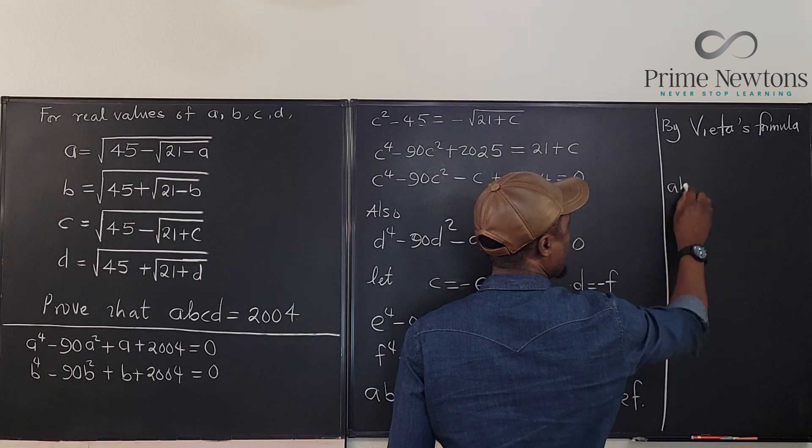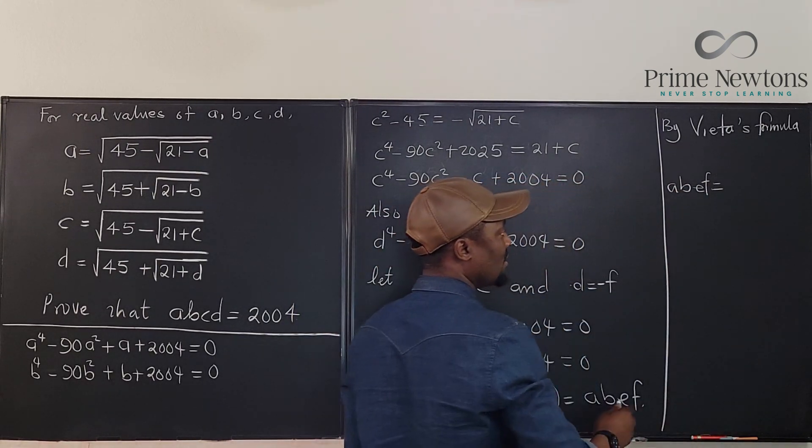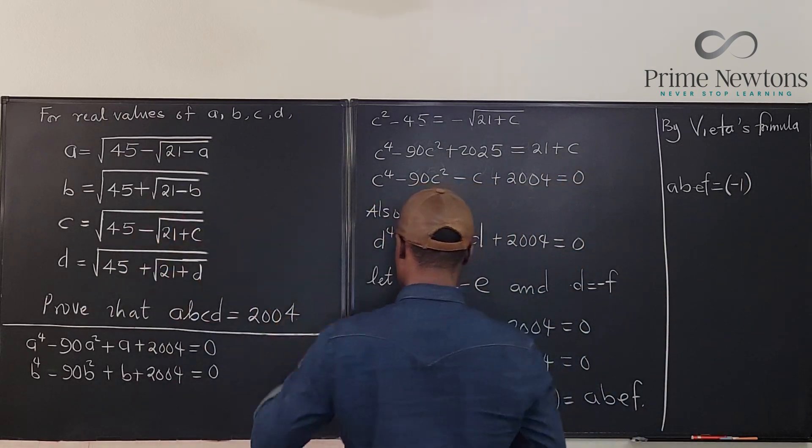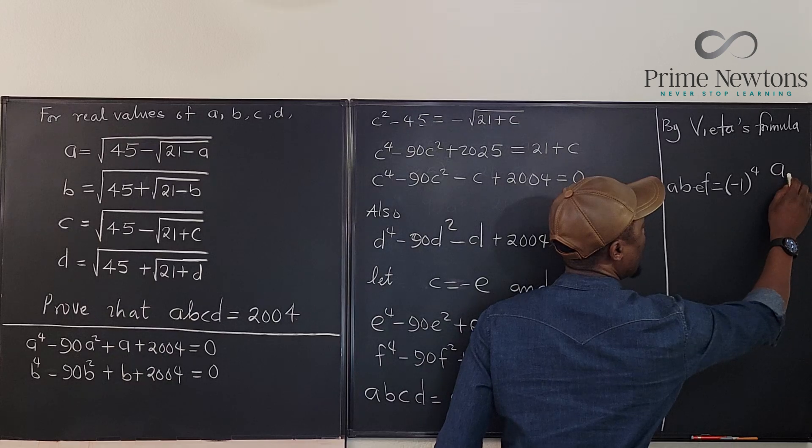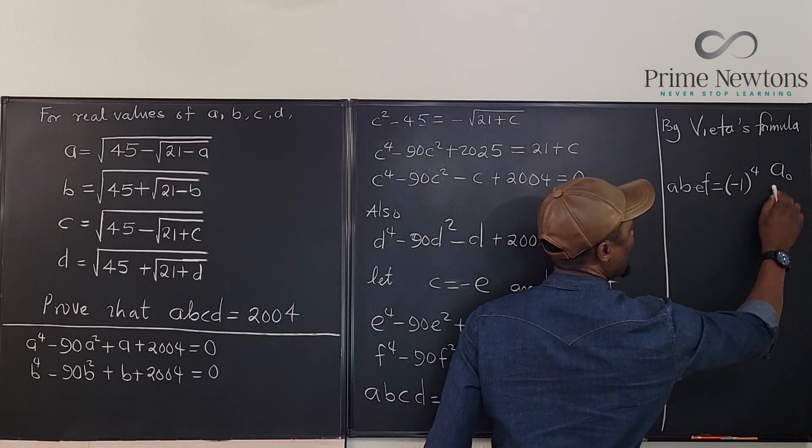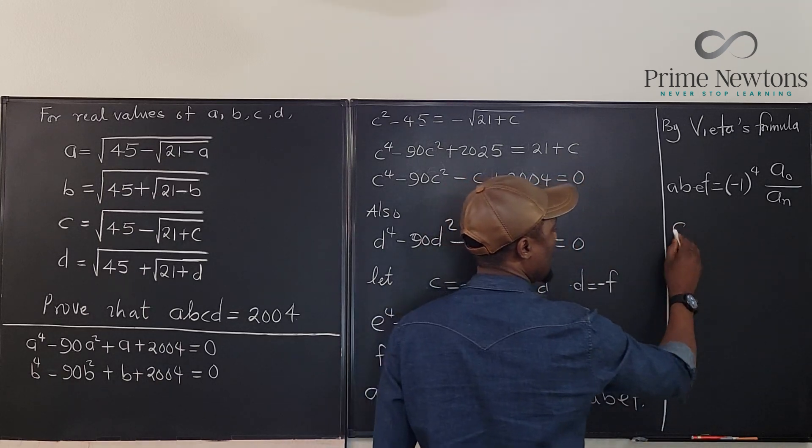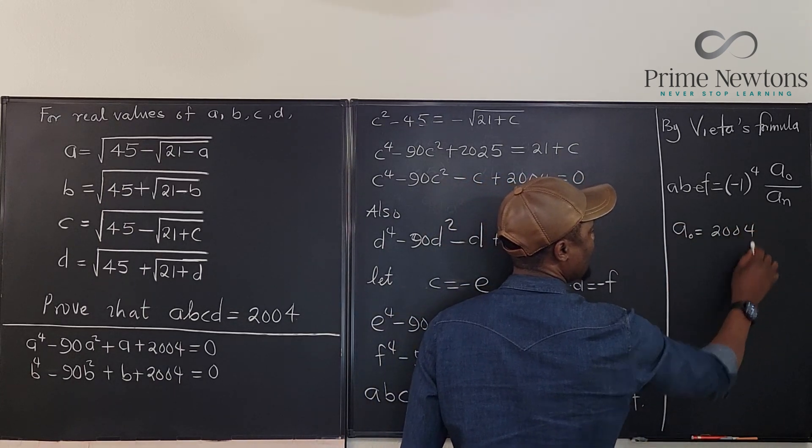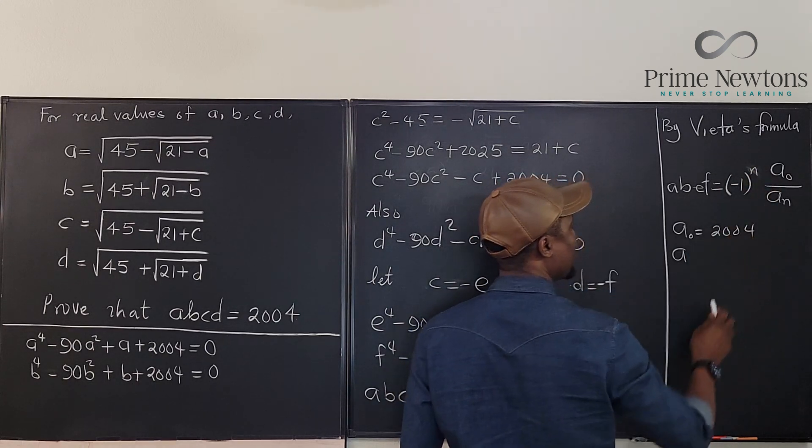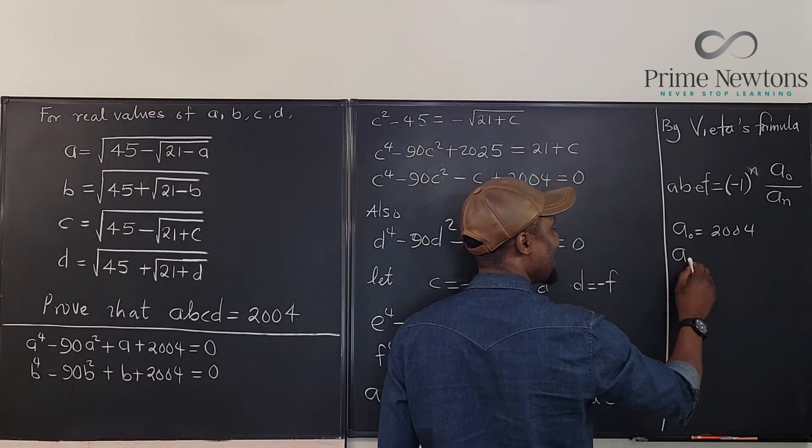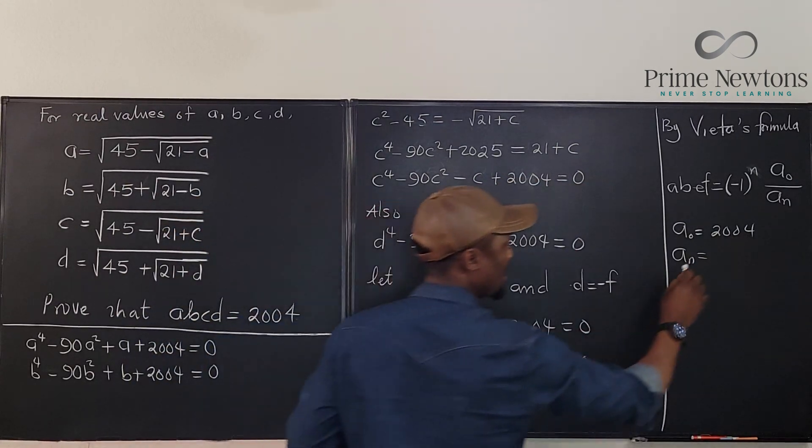So the product of the roots of a polynomial is always given by, remember, Vieta's formula. Product A, B, E, F will be equal to... In this case, the degree of the polynomial is 4. So rest of our 4 of A sub... What would it be? 0. The very constant term over A sub n. In this case, our A sub 0 is 2004 A sub... Let's write A sub n. Okay. So A sub n is... The leading coefficient is 1 in this case.